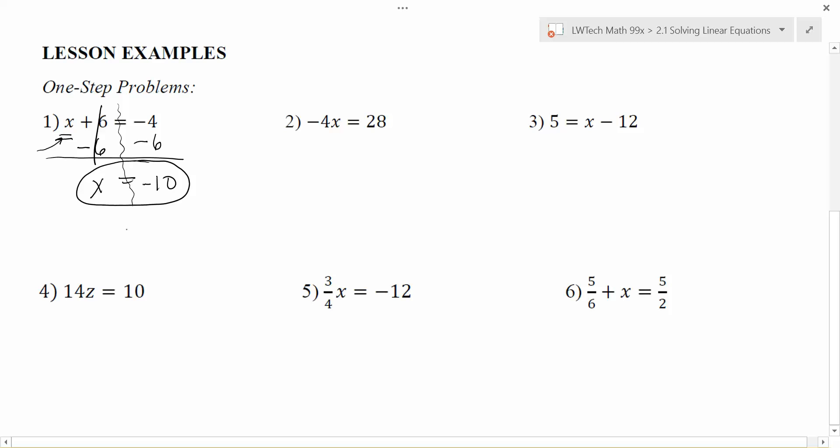Now the nice thing about solving equations is that you can check if this answer works. If this answer works, it should make my original equation true. That means if I take my value that I got for x, in this case -10, and I substitute it back into my equation, if I were to simplify this side of the expression, it should be equal to what's on the other side. And sure enough, -10 + 6 is -4, and -4 equals -4, which means I did everything right. So this is our process as we try to solve through these equations.